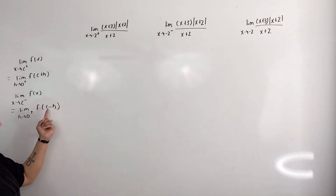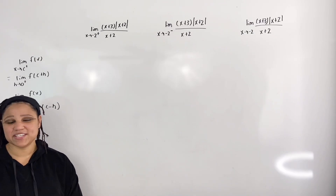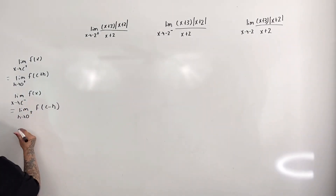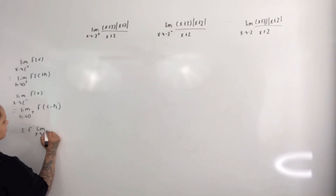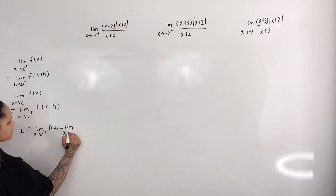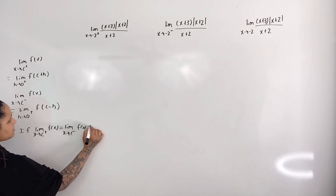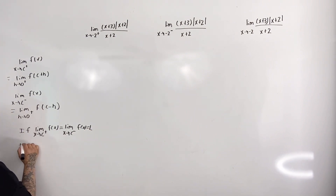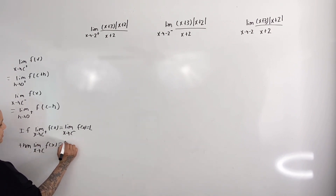Here's another thing to keep in mind: if the limit as x approaches c from the right of f(x) is equal to the limit as x approaches c from the left of f(x), and that equals some number L, then the limit as x approaches c of f(x) is equal to L.